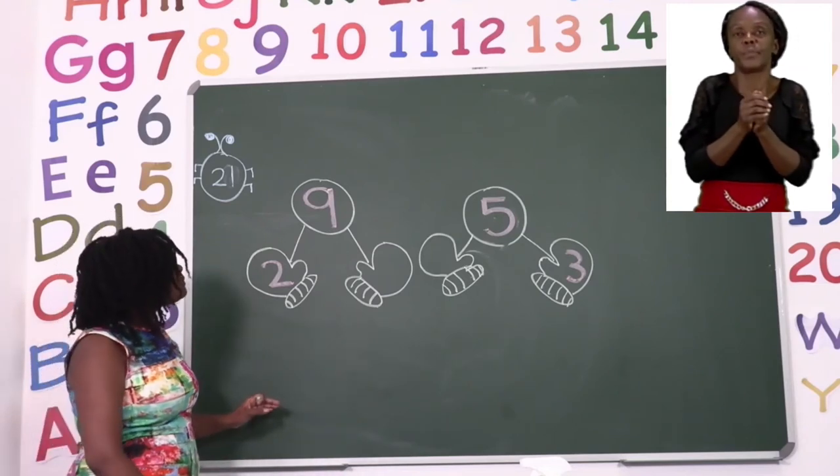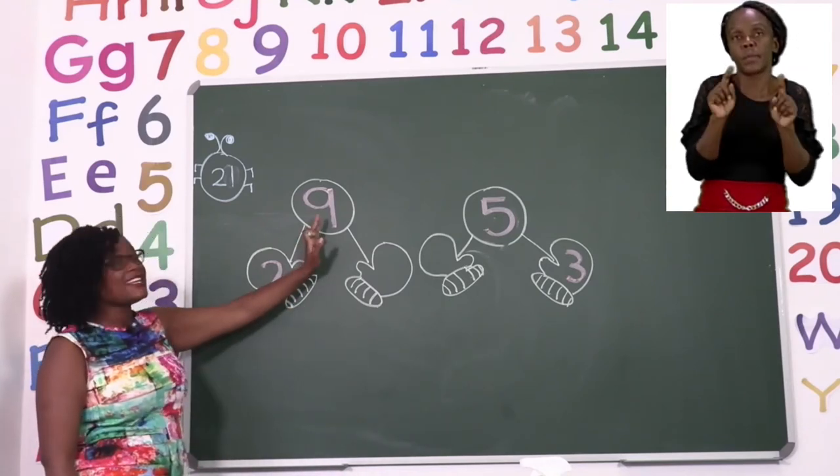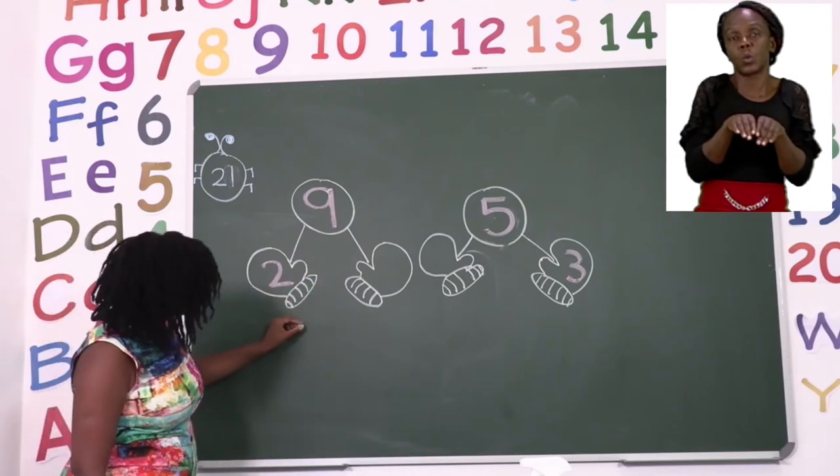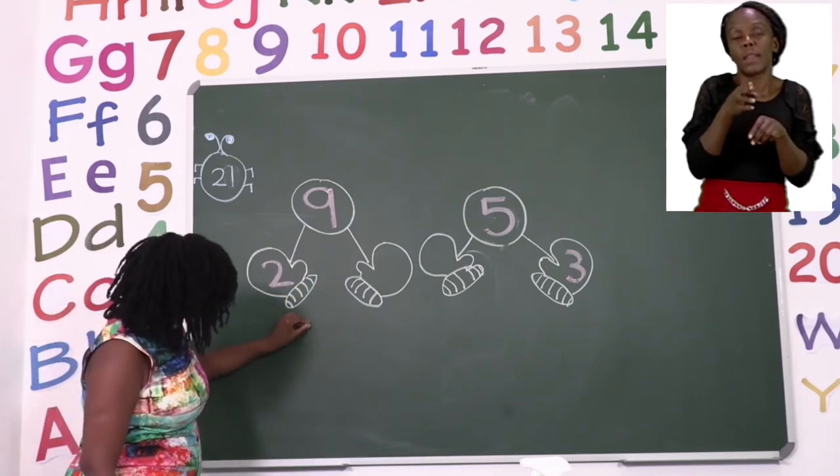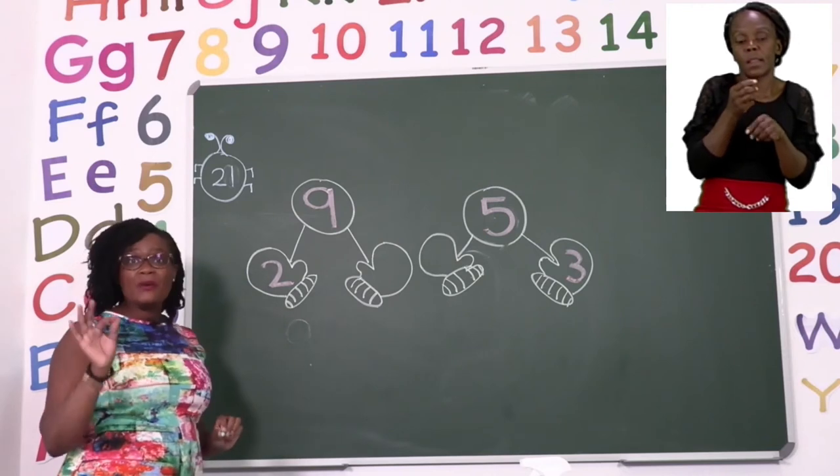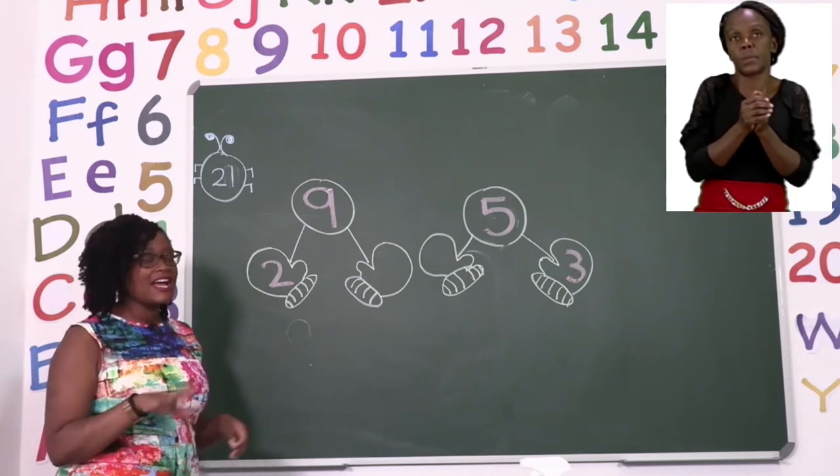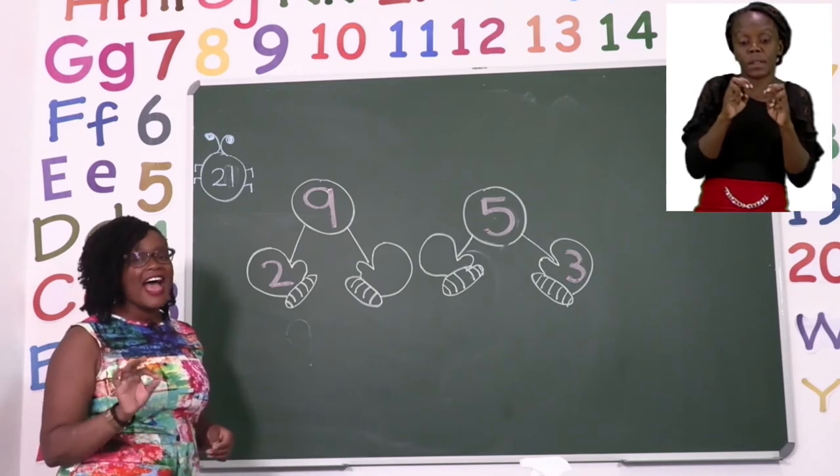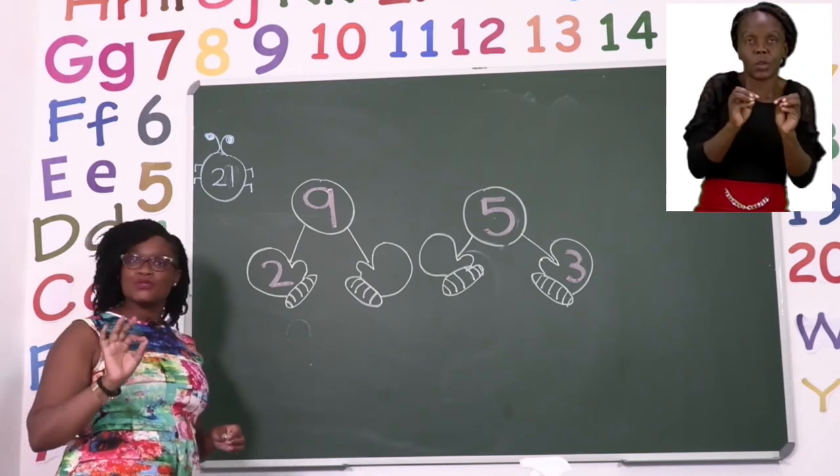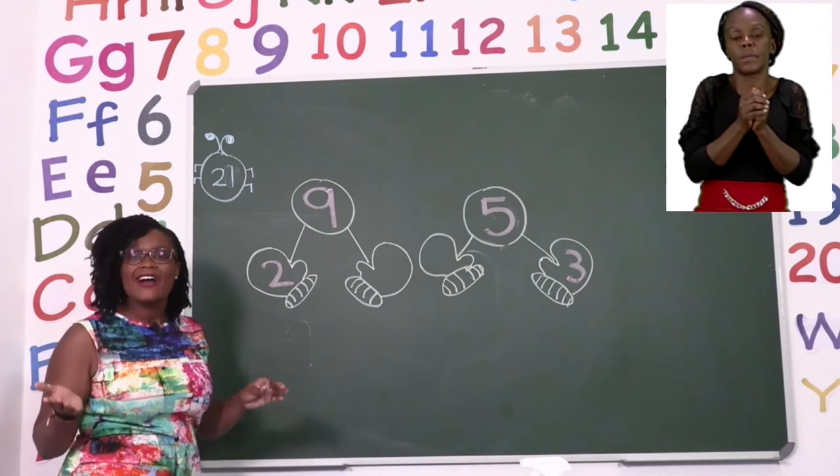So the first thing we're going to do for this one is to write our answer. And our answer here is nine. The reason why we're writing our answer first is so that we can find the missing number for the mitten and we are going to subtract or take away.